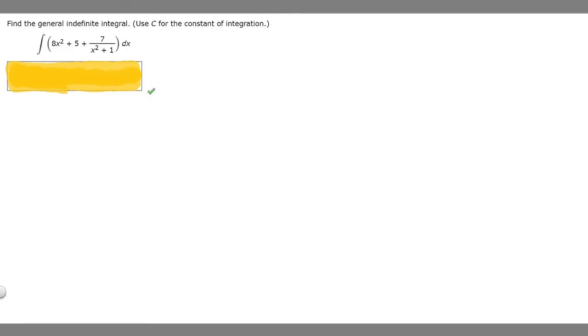In this problem we're told to find the general indefinite integral, using C for the constant of integration. We're given this integral of 8x squared plus 5 plus 7 over x squared plus 1 dx.